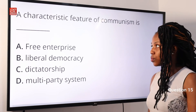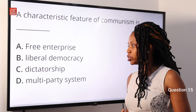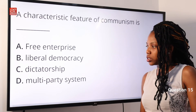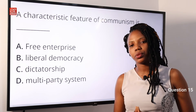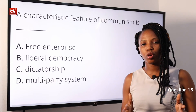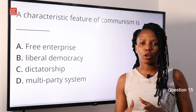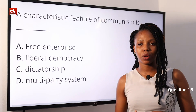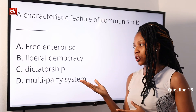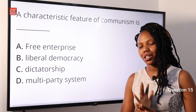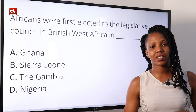Question 15: A characteristic feature of communism is — A: free enterprise; B: liberal democracy; C: dictatorship; D: multi-party system. Communism is a political and economic system in which the community, through common ownership, collectively controls all means of production. Most communist states are usually dictatorships — for example, North Korea. Option C — dictatorship — is the correct answer.